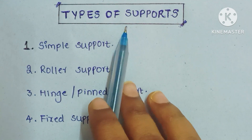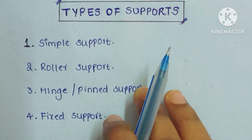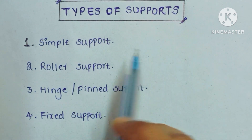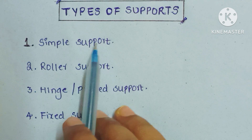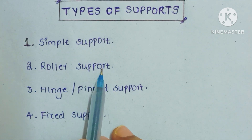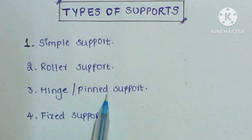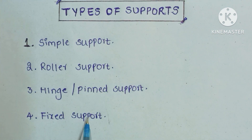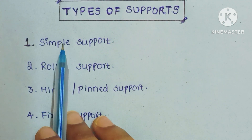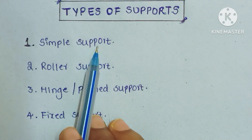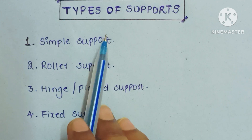Now we will see types of supports. There are four types of supports: one is simple support, second one is roller support, third one is hinge or pin support, and fourth one is fixed support. Simple support is also called frictionless support.